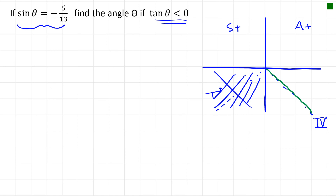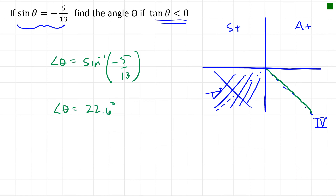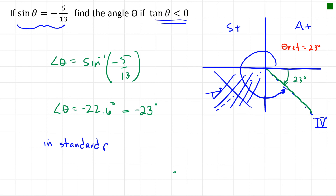We use the sine ratio to calculate the angle: theta equals the inverse sine of negative 5 over 13, which gives approximately negative 22.6 degrees, rounded to negative 23 degrees. The reference angle is therefore 23 degrees. The angle in standard position goes counter-clockwise, so it's 360 degrees minus 23 degrees, which equals 337 degrees.